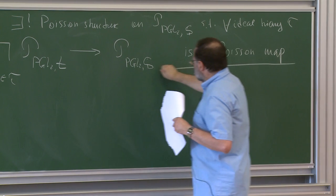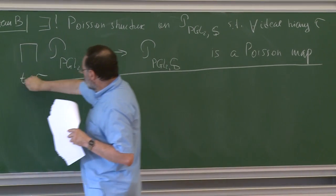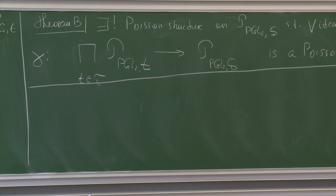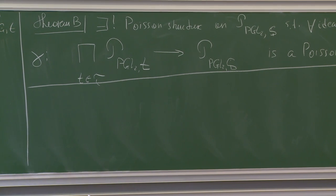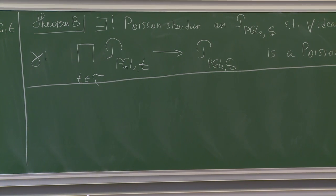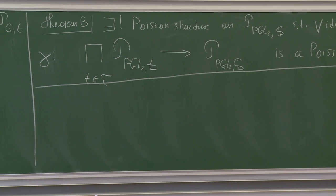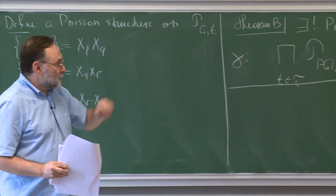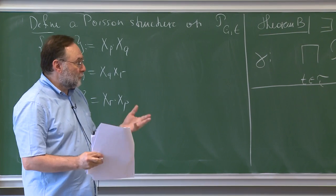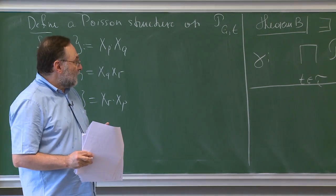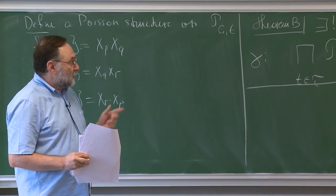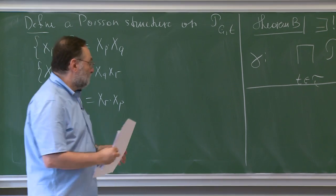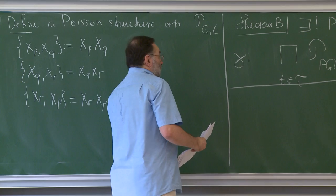This theorem tells you two things: first, what are the Poisson brackets between the coordinates we just introduced; and second, that if you change the ideal triangulation, the Poisson structure stays the same.